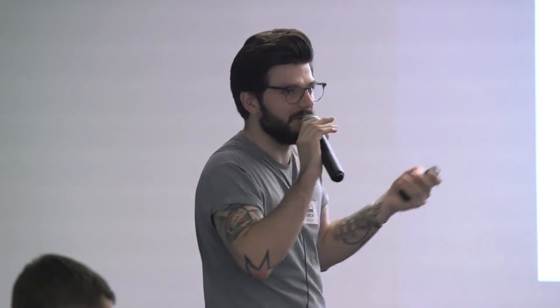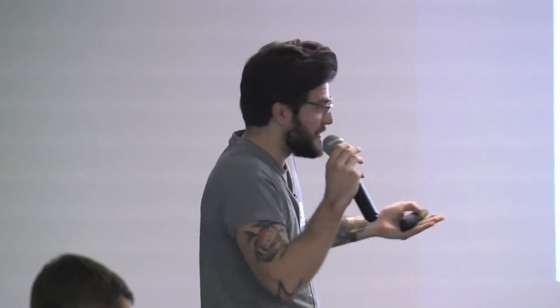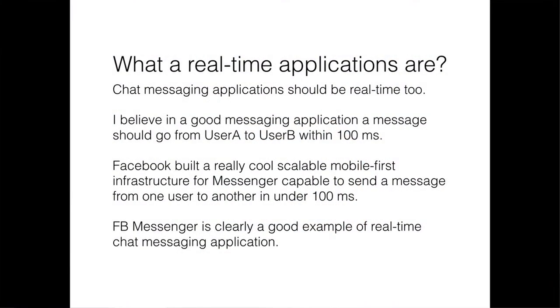Self-driving cars, for example, have really strict response times, because if you hit someone, it's pretty bad. Chat messaging applications are real-time too, but their time constraint is quite less strict. A good messaging application is something that sends a message from user A to user B within 100 milliseconds.